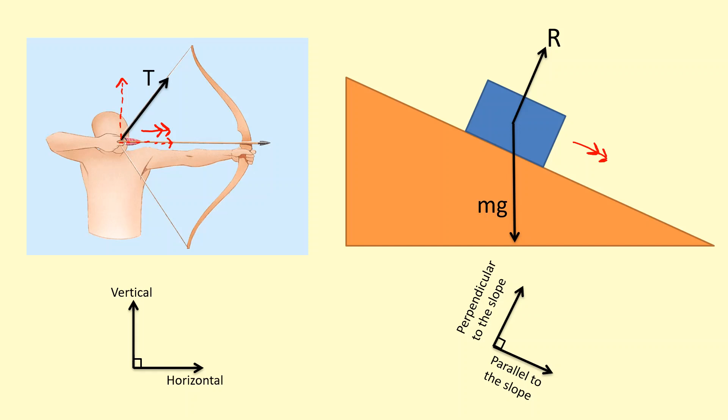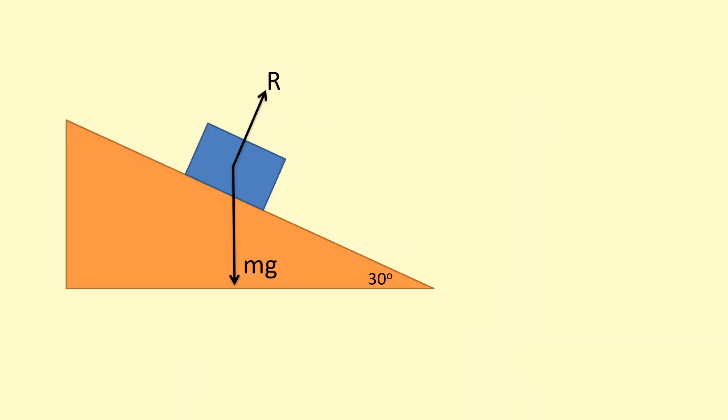The normal reaction force is already perpendicular to the slope, so we don't need to do anything to that. It's the weight that we need to resolve. I'm going to show how to resolve the weight perpendicular and parallel to the slope. Firstly, this is 30 degrees. So you're going to find that this component here...